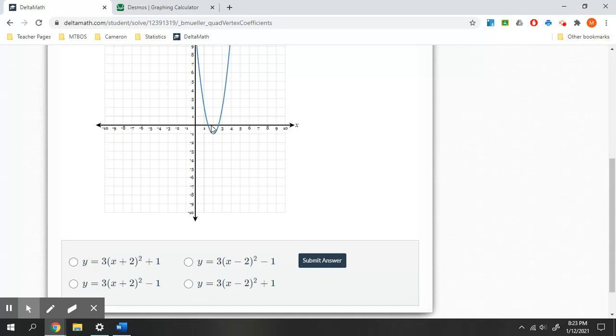So I need the one that tells me we went right 2, down 1. Well, right 2 would be a minus 2 inside parentheses, and down 1 would be a minus 1. So that's our correct answer.